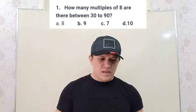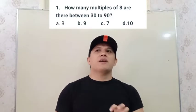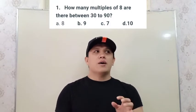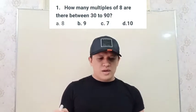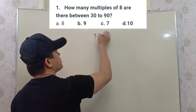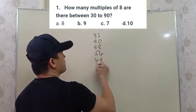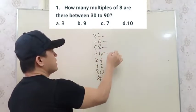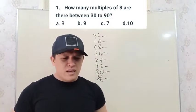Number one: how many multiples of eight are there between 30 and 90? Multiples of eight are numbers which eight can divide, between 30 and 90. So we have 32, 40, 48, 56, 64, 72, 80, and 88. That gives us eight numbers. There are eight multiples of eight between 30 and 90.